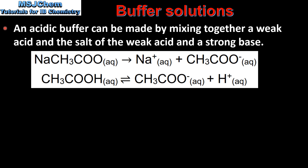Next we look at another way of making a buffer solution. An acidic buffer can be made by mixing together a weak acid and the salt of the weak acid and a strong base. Sodium ethanoate is the salt of a weak acid and a strong base. It fully dissociates to form sodium ions and ethanoate ions. The weak acid is ethanoic acid, and it partially dissociates to form ethanoate ions and hydronium ions. Because ethanoic acid is a weak acid, the equilibrium lies to the left. So the buffer solution has a relatively high concentration of ethanoate ions and a relatively high concentration of ethanoic acid.